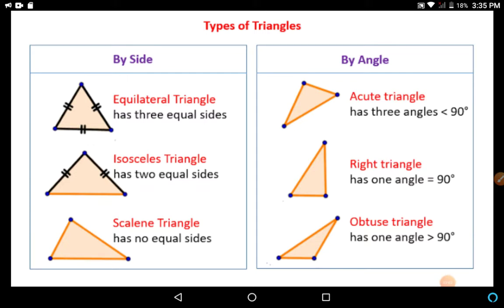Types of triangles. Left hand side, you can see three types of triangle based upon side. First is equilateral triangle. It has all the three equal sides. Isosceles triangle. It has two equal sides. Scalene triangle. It has no equal sides.